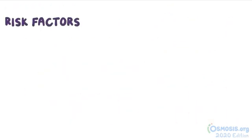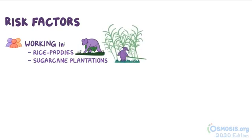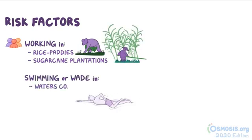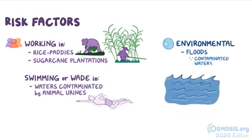Risk factors for leptospirosis include certain professions, like people who work in rice paddies or sugarcane plantations, or people who swim or wade in waters contaminated by animal urine. Environmental risk factors include hazards like floods, because contaminated waters are everywhere.